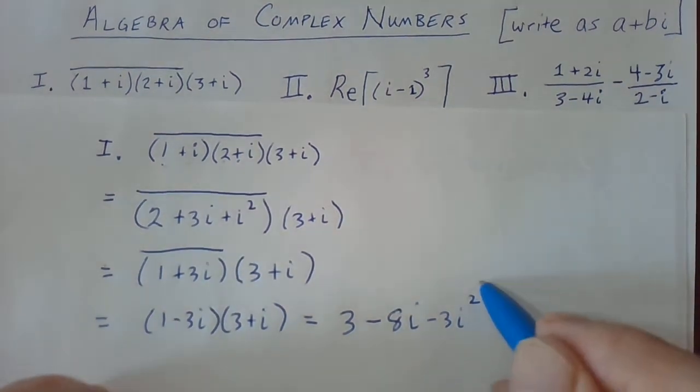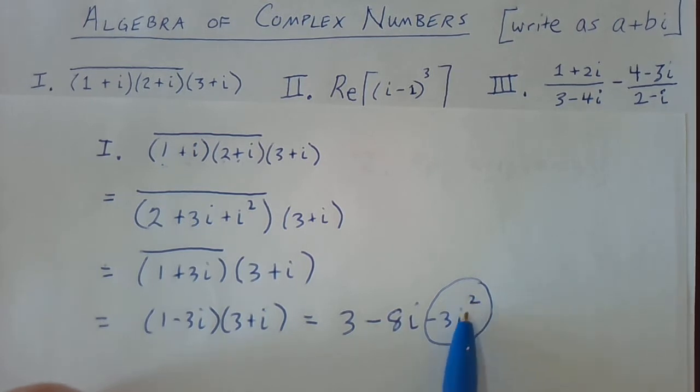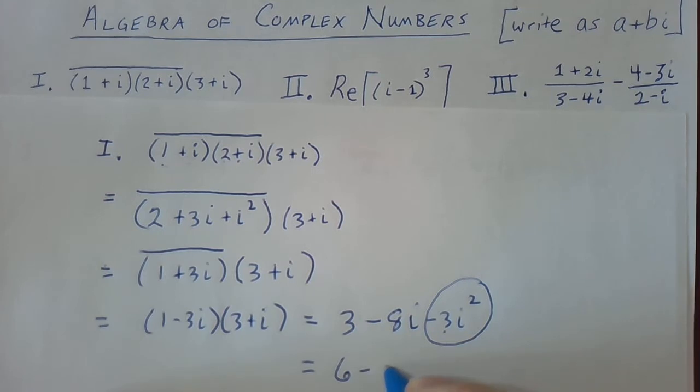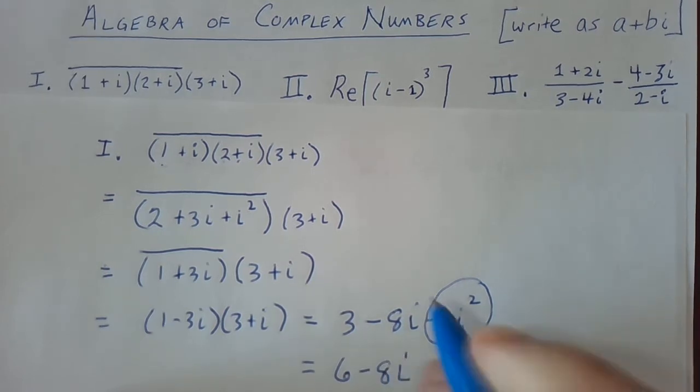But remember what this is. This is just positive 3 because i squared is negative 1 times negative 3 is positive 3. So we have 3 plus 3 which gives us 6 minus 8i.